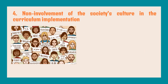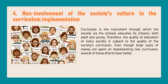The fourth issue of curriculum implementation is the non-involvement of society's culture in curriculum implementation. Curriculum is the instrument through which society, via the school, educates its citizens — both adults and the young. Therefore, the quality of education of every society is subject to the quality of society's curriculum. Even though large sums of money are spent on implementing new curriculum, several efforts have failed. The main reason for failure is the lack of understanding of the culture of the school by both experts outside the system and educators within it. Successful implementation requires understanding the power relationships, traditions, and roles and responsibilities of individuals in the school system.